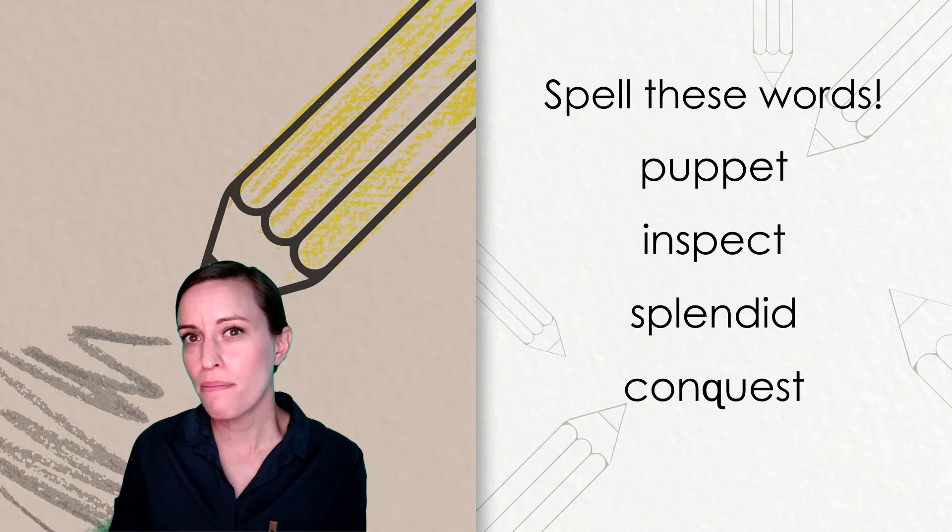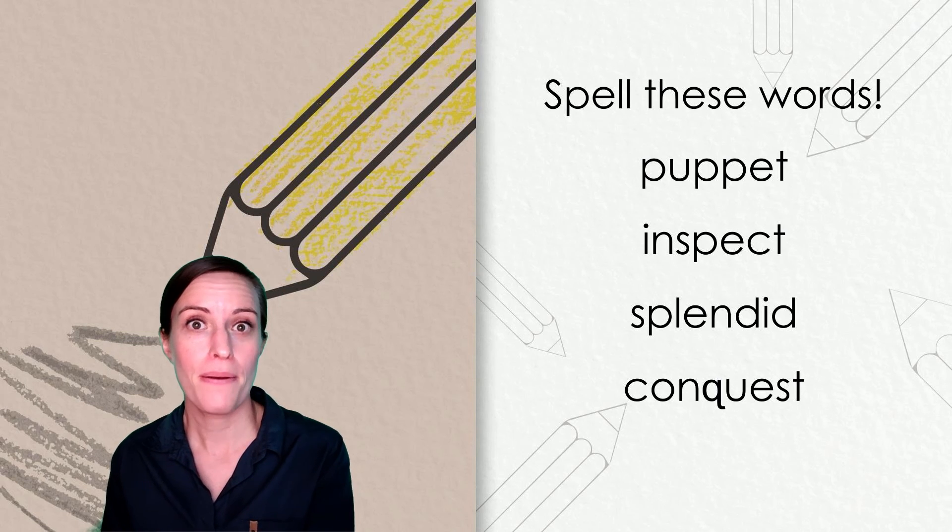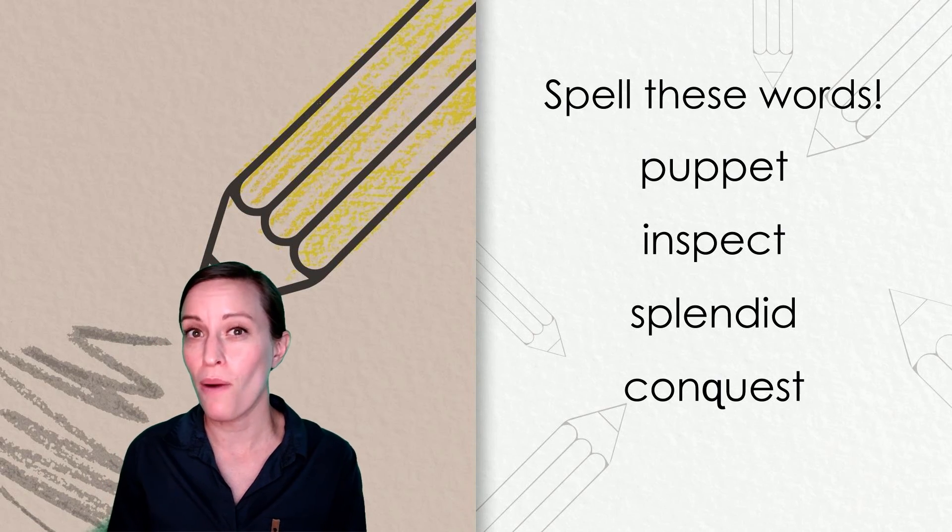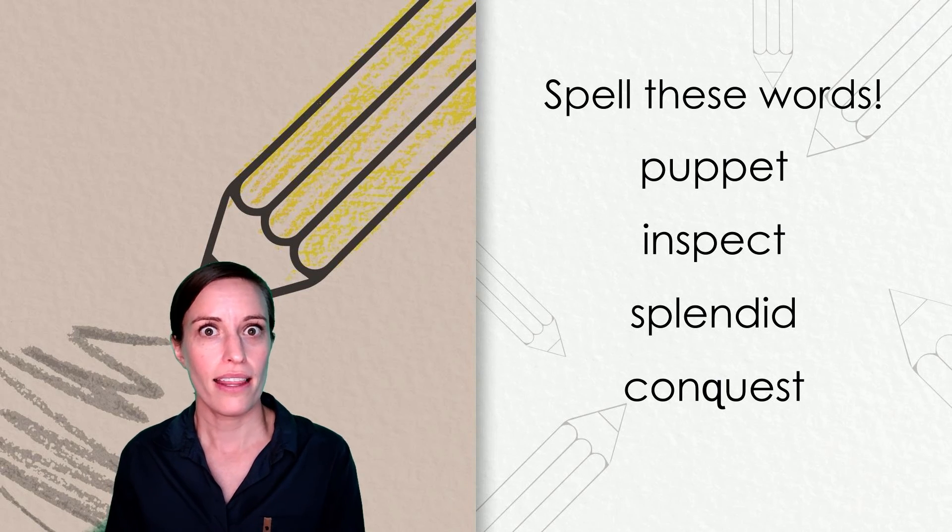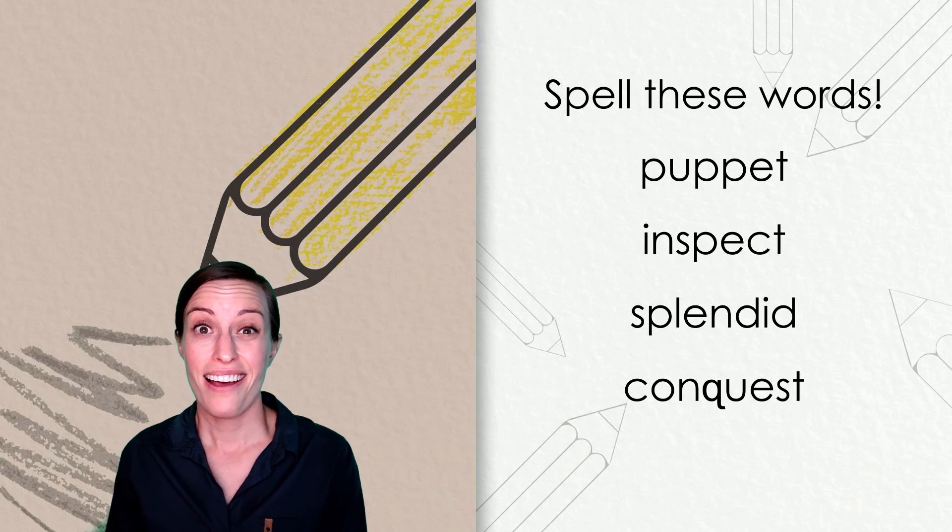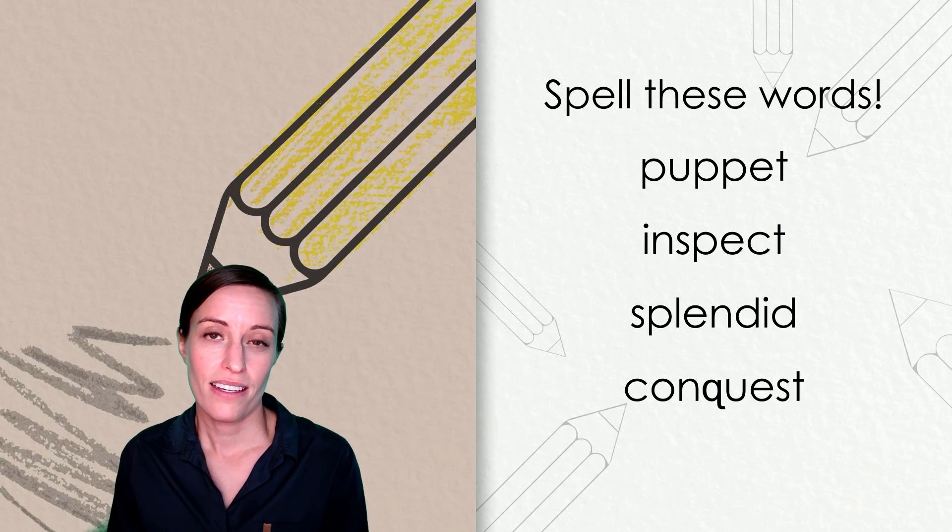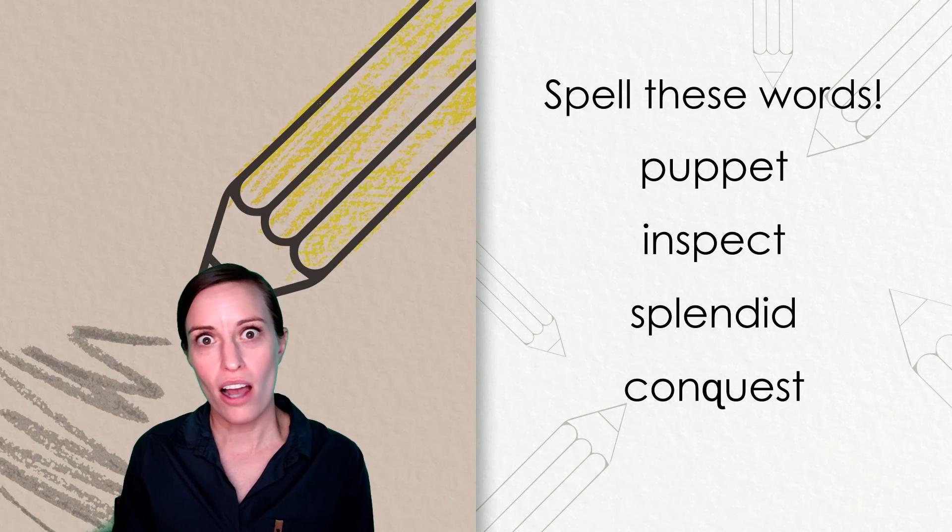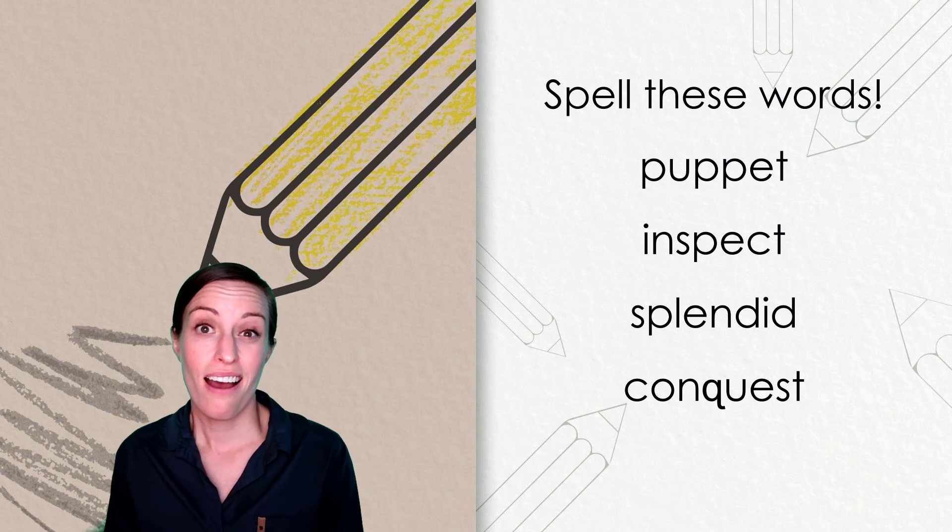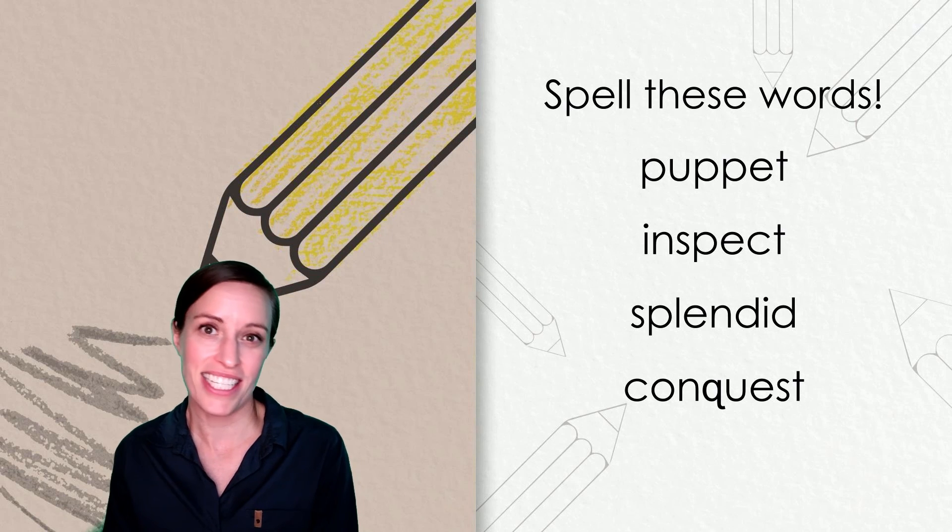Nicely done. Let's take a peek at each word together. Puppet. Puppet. If we break that into syllables, we have pup-pet. Puppet. The second word was inspect. In-spect. Inspect. That word had a few blends in it. The third word was splendid. Splendid. It has a blend at the beginning. S-P-L. And finally, conquest. The word conquest has that Q with its buddy U in the middle. That's what makes the Qu. How did you do? Think about what you did well with writing these words and what you want to keep working on.